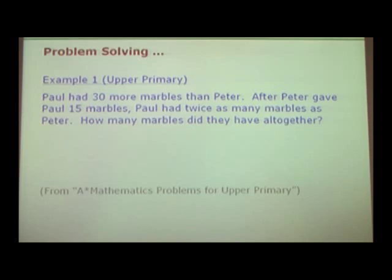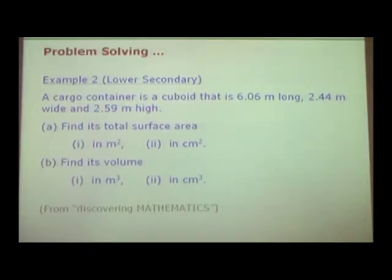So I'm going to show you three problems from three different levels. The first one is from upper primary level. It says that Paul had 30 more marbles than Peter. After Peter gave Paul 15 marbles, Paul had twice as many marbles as Peter. How many marbles do they have altogether? This is not from me. This is from an assessment book by A-Star Problems for Upper Primary.